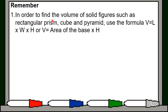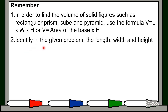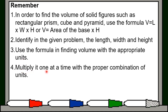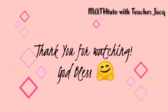Remember: to find the volume of solid figures such as rectangular prism, cube, and pyramid, use the formula volume equals length times width times height, or volume equals area of the base times height. Identify the given values: the length, the width, and the height. Use the formula with appropriate units, multiply one at a time with the proper combination of units, and do not forget — in volume, we always use 3 as an exponent to express cubic. Thank you so much for watching and listening to this video.